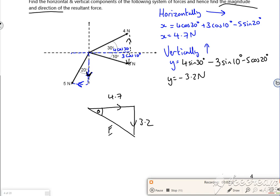So now I can work out the resultant force and the angle. So the resultant force, I'll call it R. So the resultant force will be 4.7 squared plus 3.2 squared, which the completed pack says is 5.7 newtons.